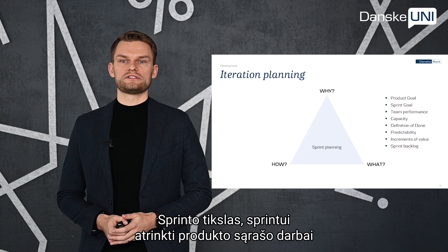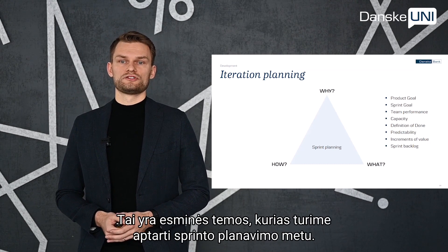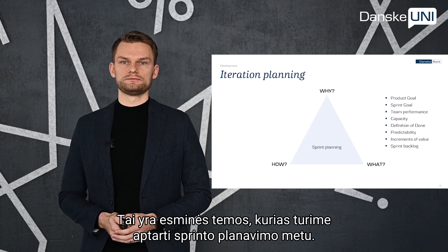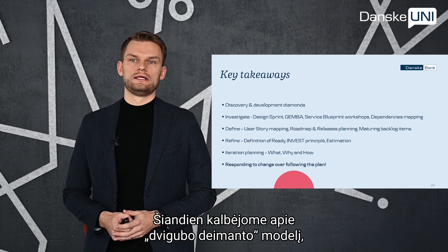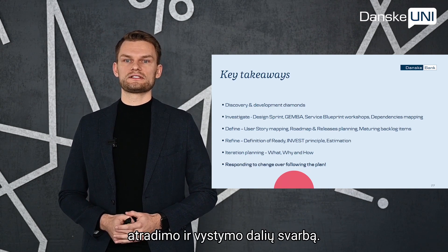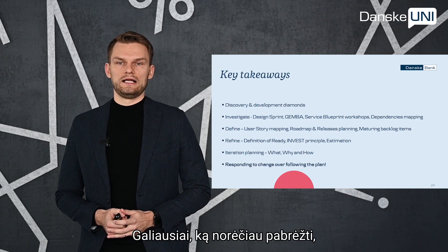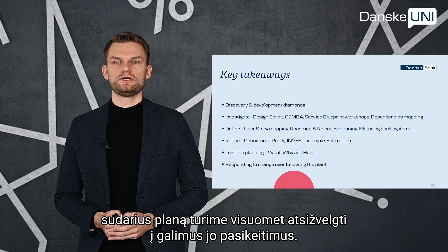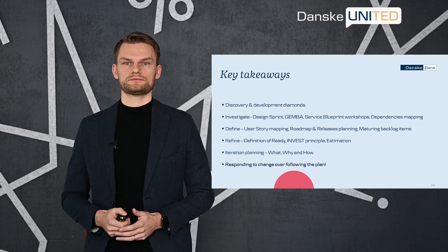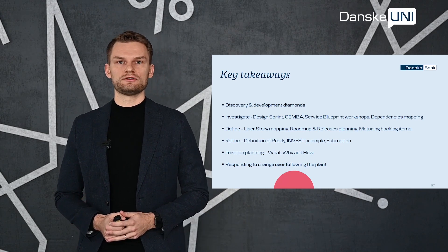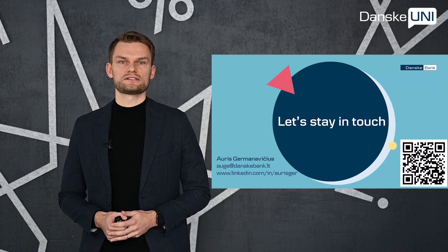This is often done by decomposing product backlog items into smaller work of one day or less. How this is done is at the sole discretion of the team members — no one else tells them how to turn product backlog items into increments of value. The sprint goal, product backlog items selected for the sprint, plus the plan for delivering them are together referred to as the sprint backlog. These are the main topics to cover during iteration or sprint planning. In this video, we have talked about the double diamond model, the importance of discovery and development parts, different phases and techniques in the discovery diamond, and we also touched upon iteration planning. What I would like to emphasize is that we have to always be responding to changes over following the plan. As soon as we notice that the plan needs adjustments, we must take them into account. Don't hesitate to reach me out in case you'd like to learn more.